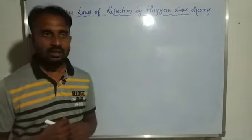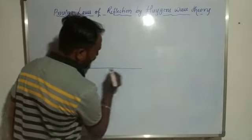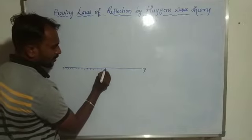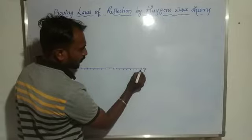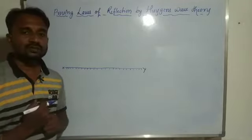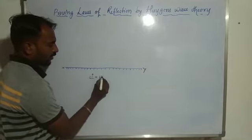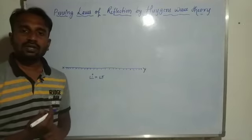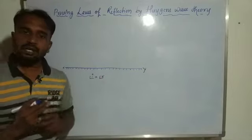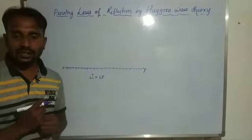Here we consider a plane wavefront. The surface XY is a reflecting surface — one side is reflecting and the other side is opaque. You already know the first law of reflection: the angle of incidence is equal to the angle of reflection. The second law: the incident ray, the reflected ray, and the normal at the point of incidence all lie on the same plane. Today we want to prove these two laws using Huygens wave theory.